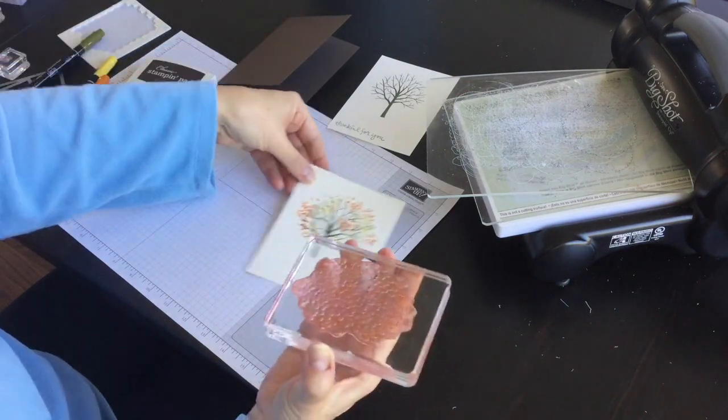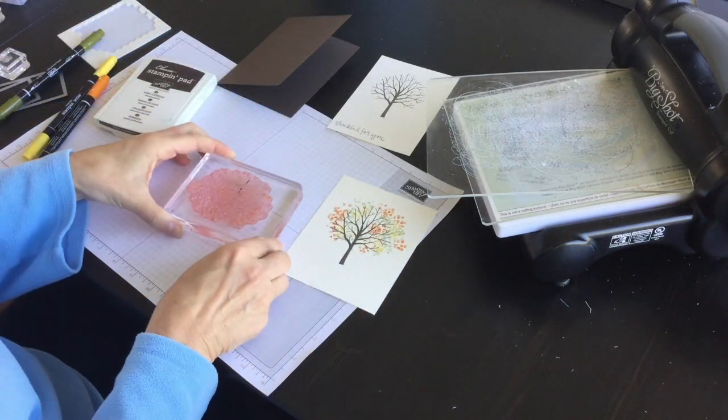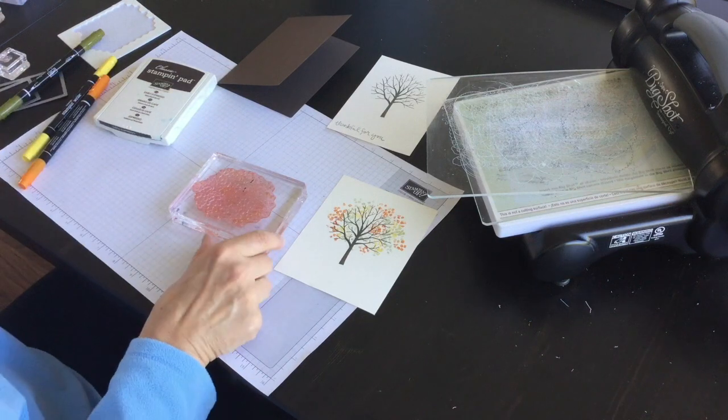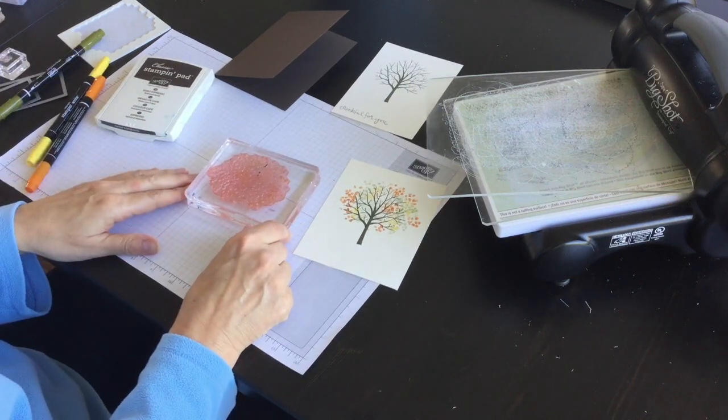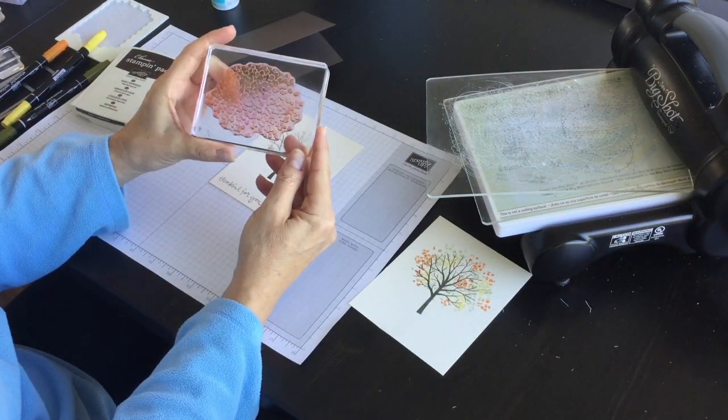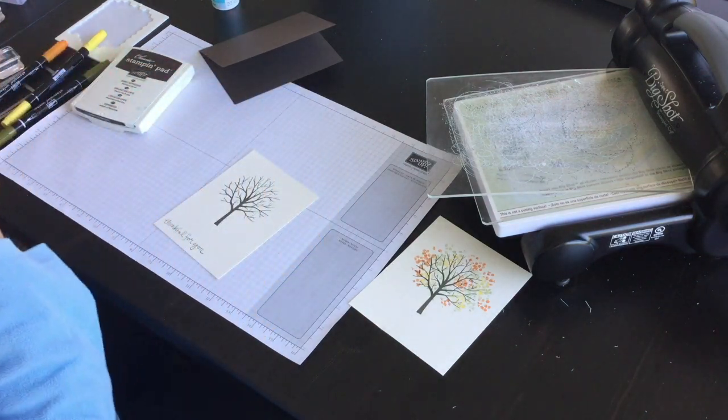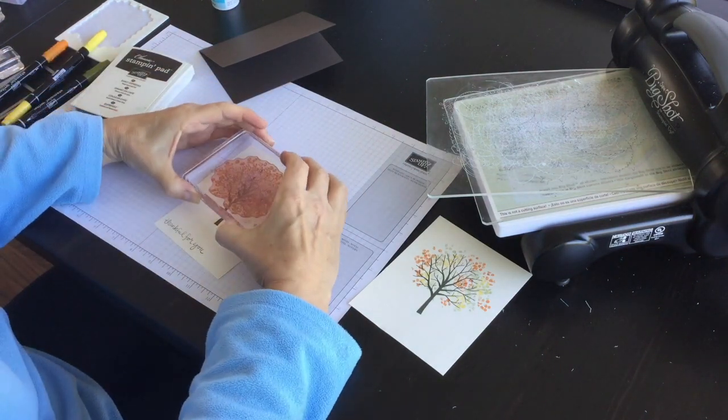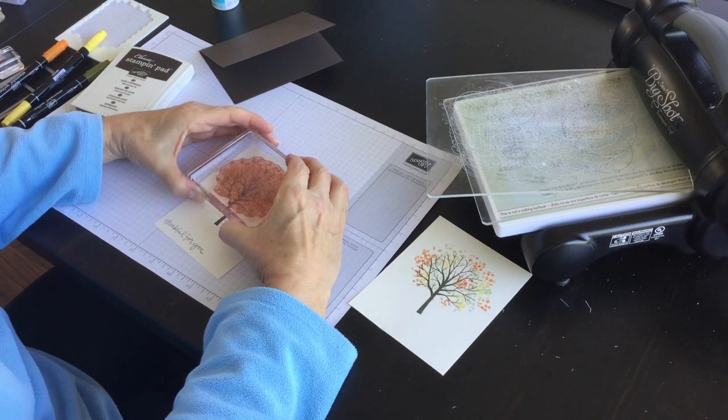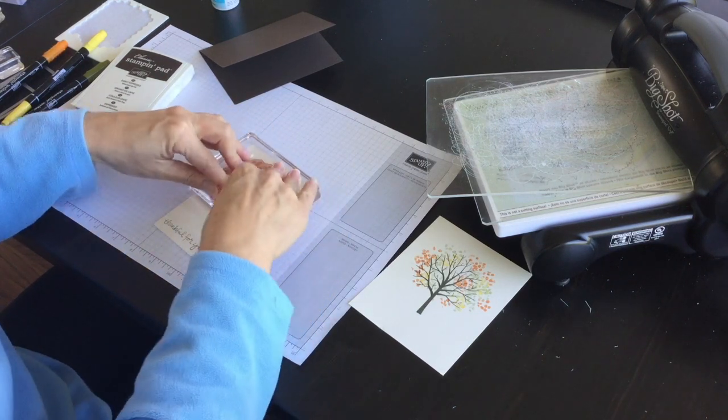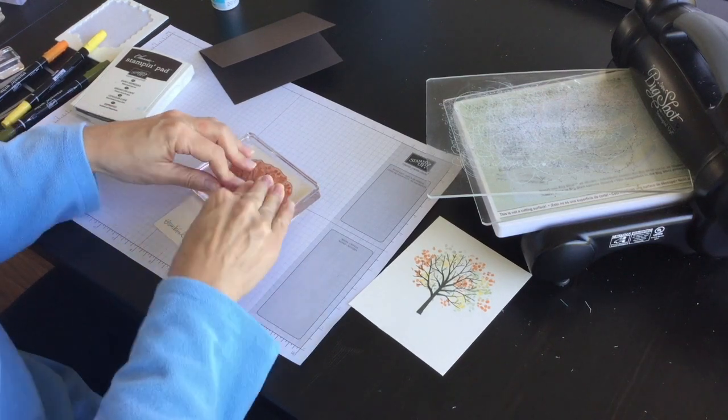Like so, then I'm going to clean the stamp and I'm going to do the same thing. I'm going to ink it up with my markers. I have finished inking up my stamp a second time. I'm going to blow on it or huff on it as well and then I'm going to stamp it down on the card front that I'm going to use as a layer like so.